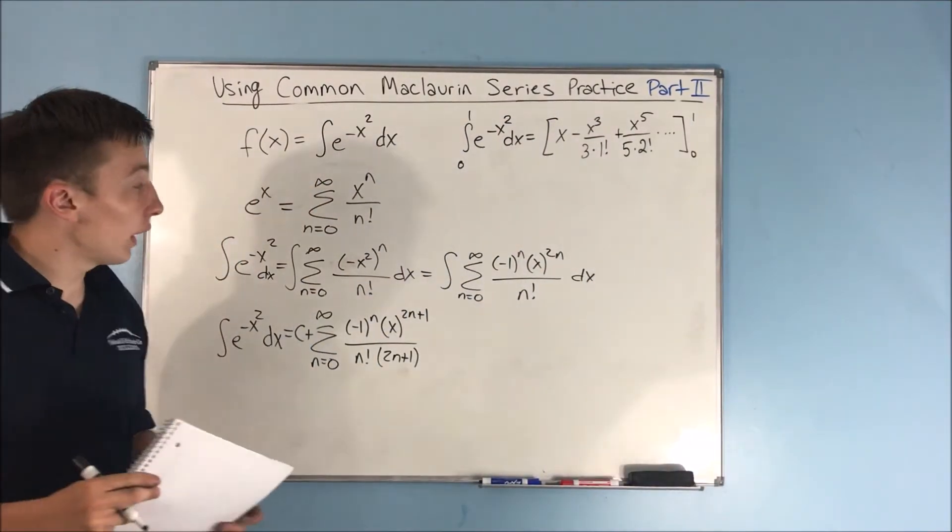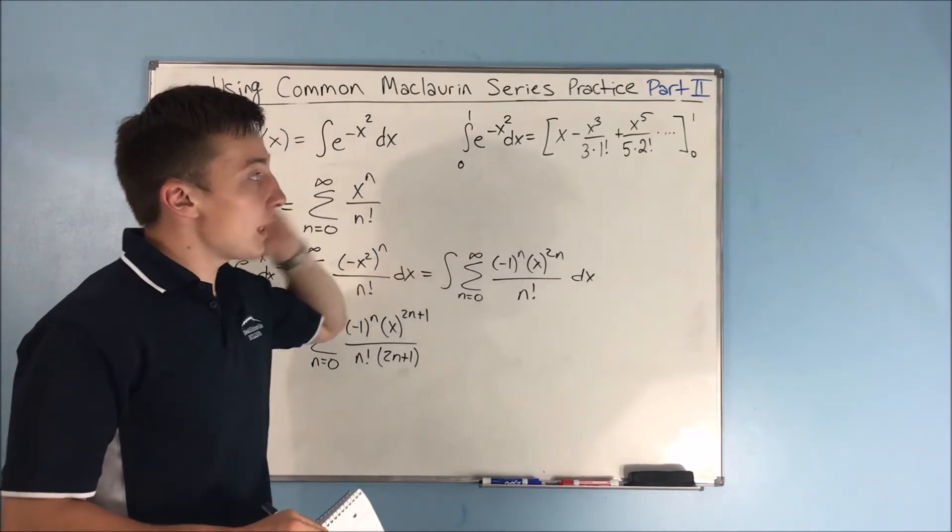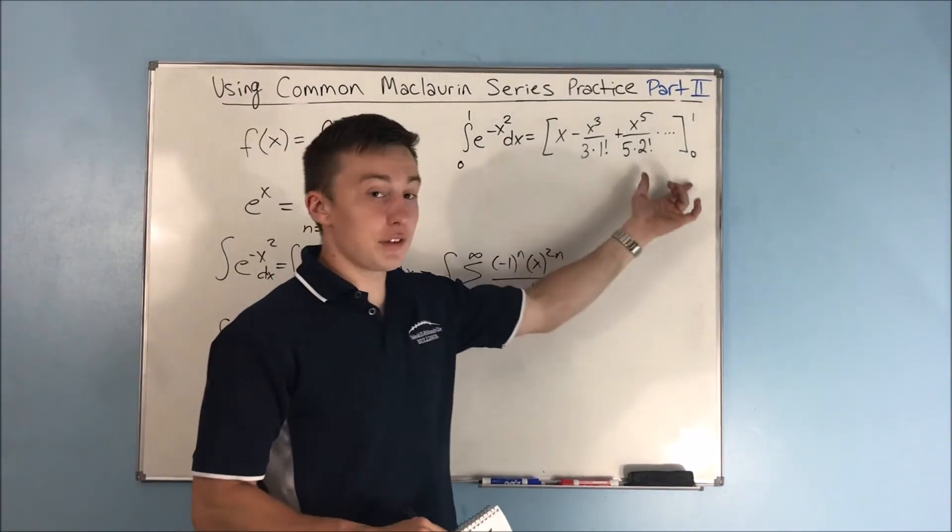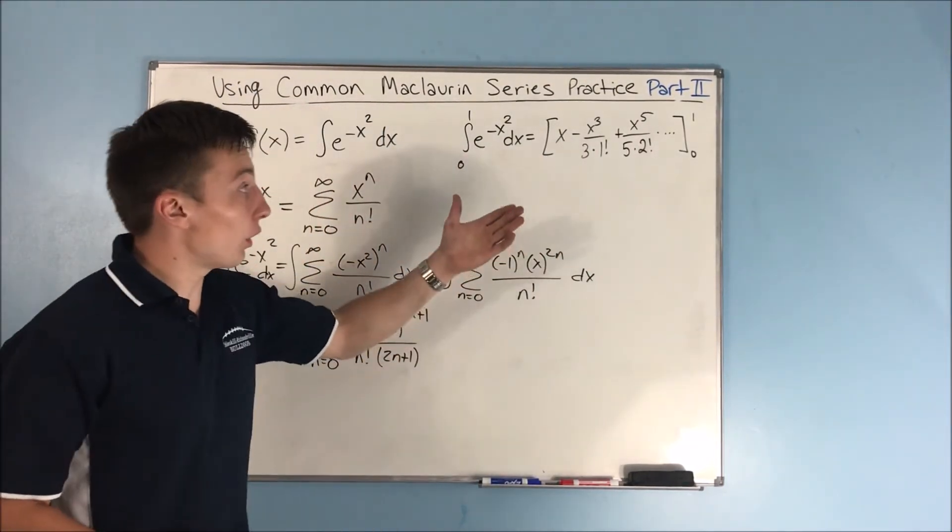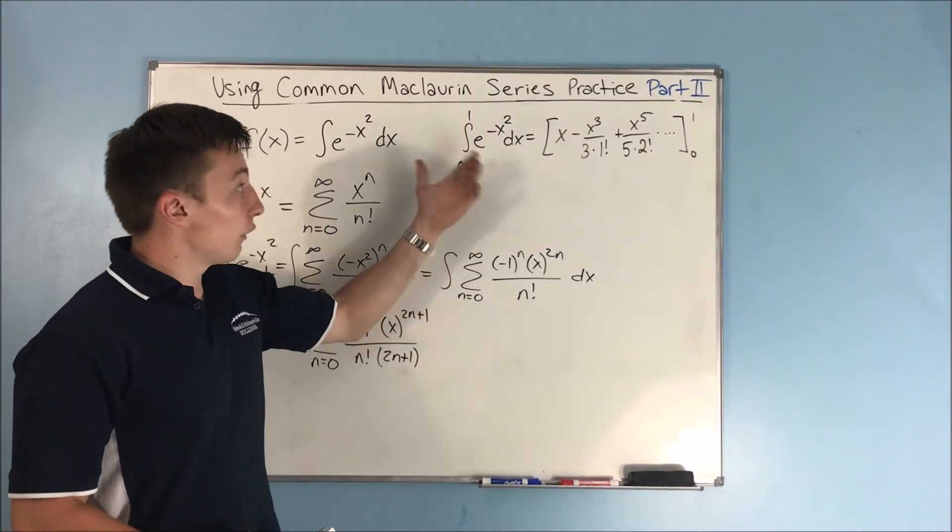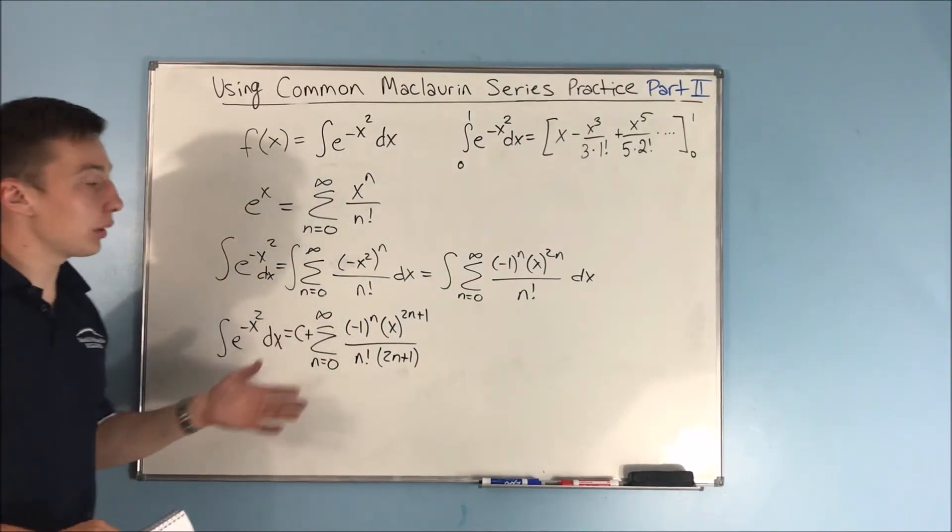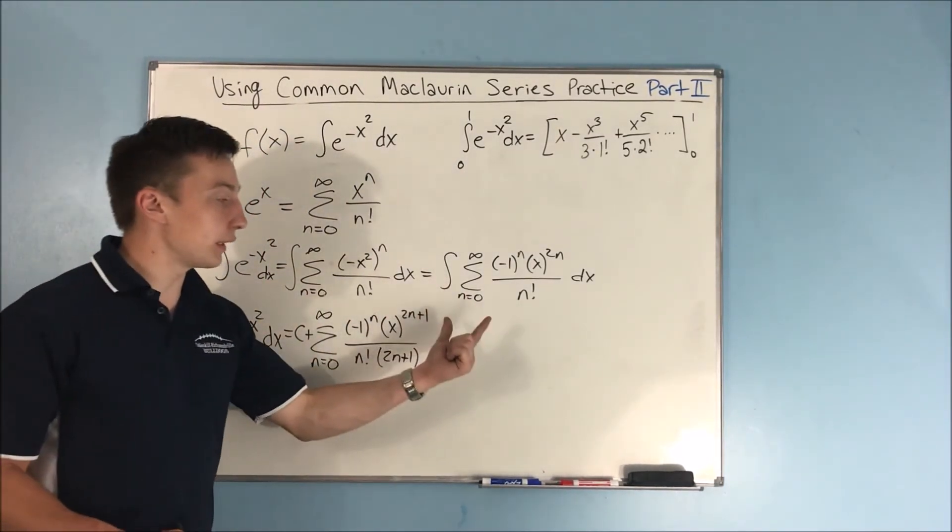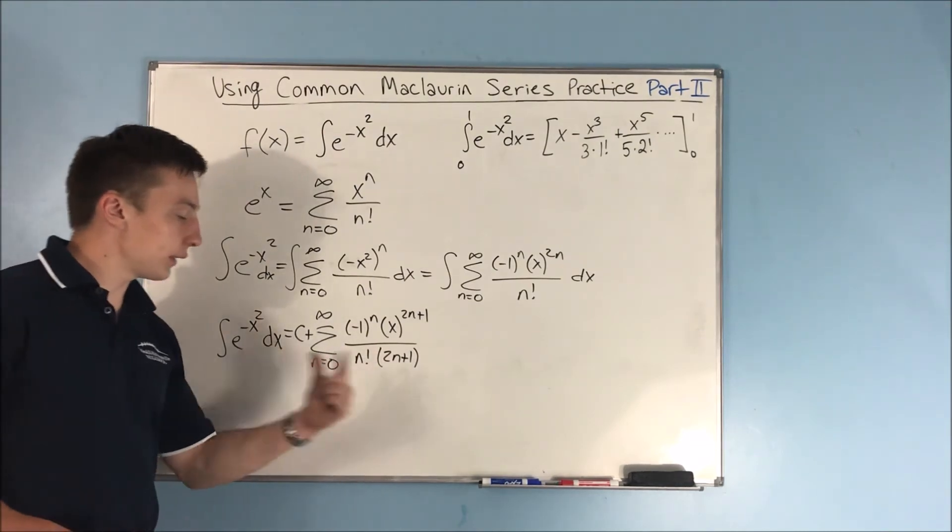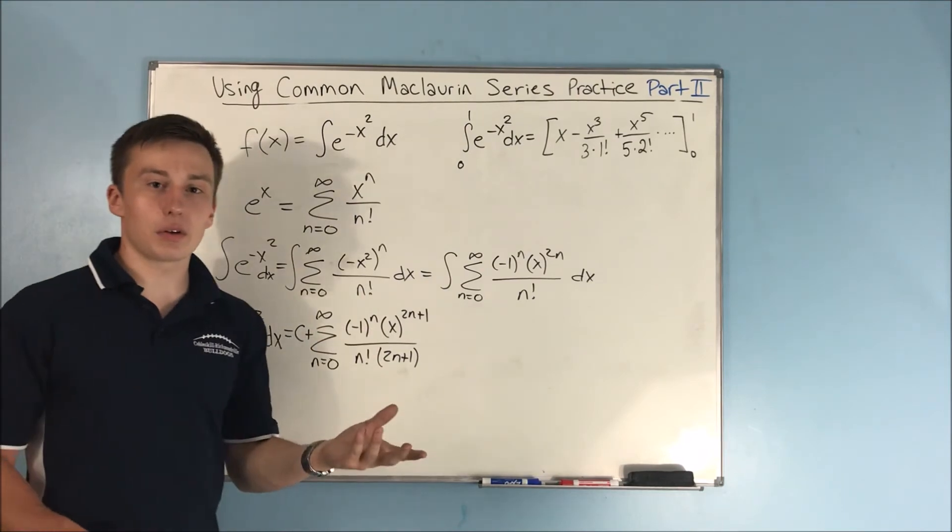So if you take maybe the first five terms and evaluate from 0 to 1, you're going to get a pretty good idea of what this integral is going to be from 0 to 1. That's some pretty cool stuff that you're able to do. From that power series representation, you're able to actually solve the unsolvable integral.